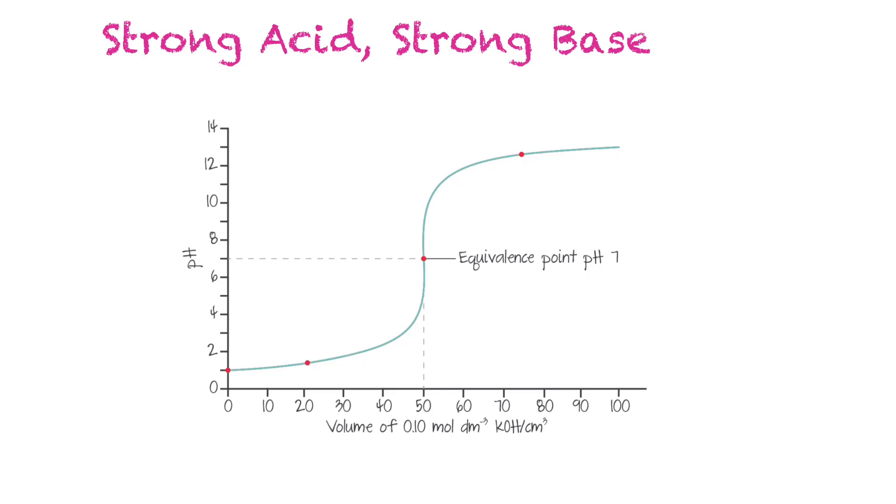When we have a titration between a strong acid and a strong base, the pH at the equivalence point is 7 because the moles of acid and the moles of base will be equal to each other. The part of the graph that has this sharp increase is called the point of inflection, and this is the equivalence point when the moles of acid equals the moles of base added.